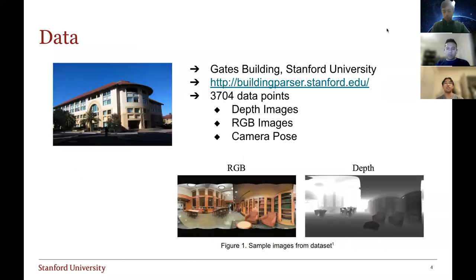So our dataset is from the Gates building, and it is composed of 3,704 data points. And each of these data points have a depth image, an RGB image, and a camera pose image. You can see an example of the RGB and depth images in the images below.